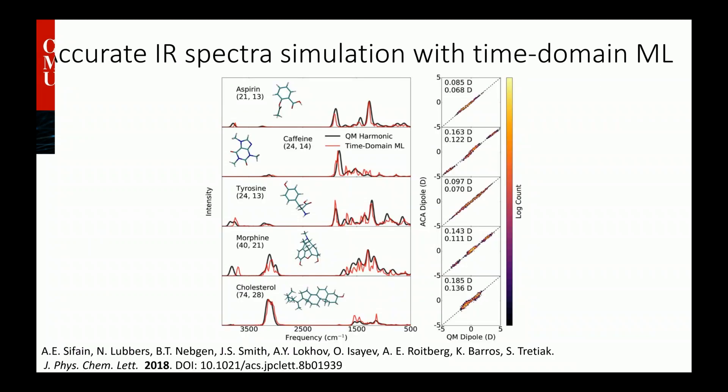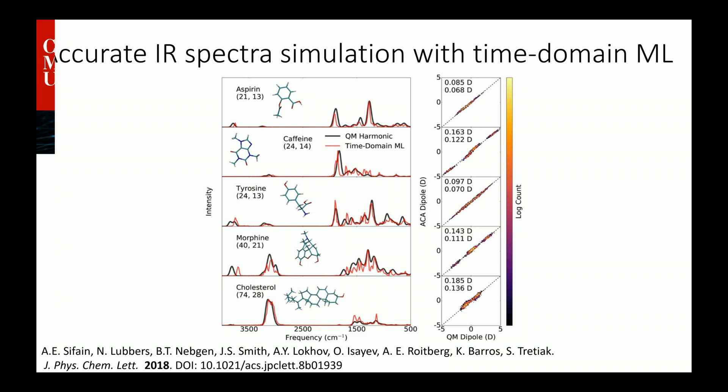In addition to thermochemistry, you can compute various spectroscopic properties. For example, you can do IR spectra simulation using time-domain simulation: you run molecular dynamics and compute the spectra. There are a couple of examples for drug-like molecules — QM spectra in black and machine learning spectra in red — and you see peaks where you expected them, at the correct magnitude. The panel on the right gives you accuracy of the dipole moment with respect to quantum mechanically computed dipole moments. The list can go on, but I will not bore you with more examples.